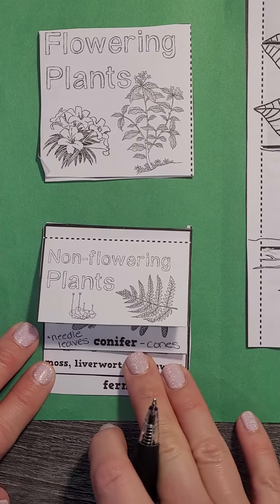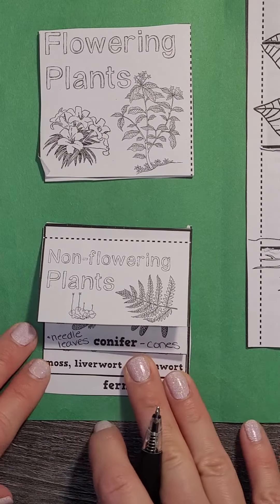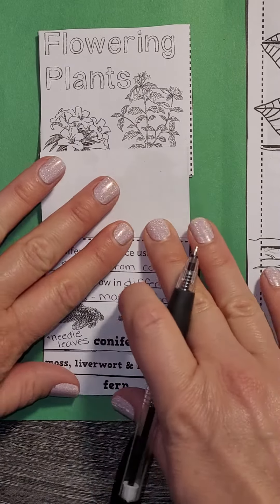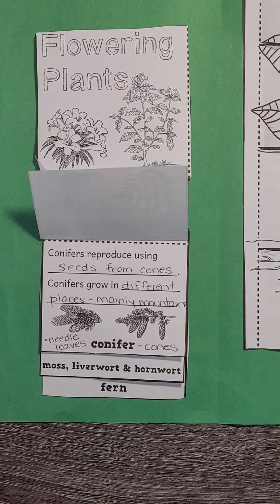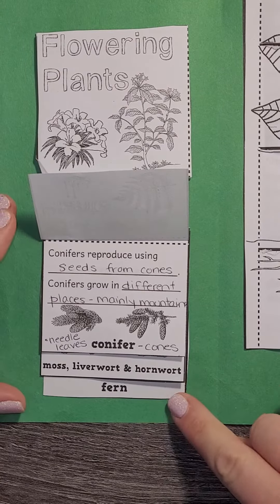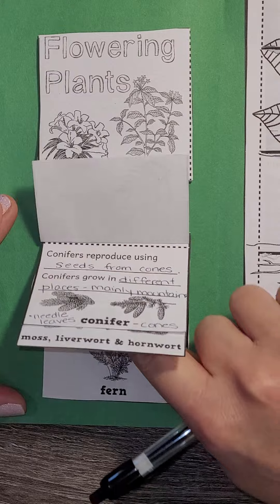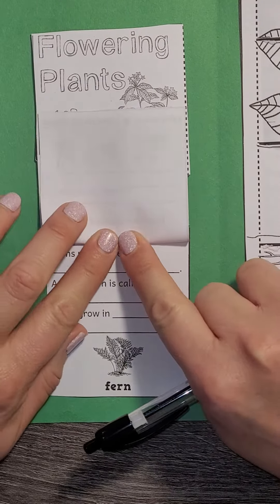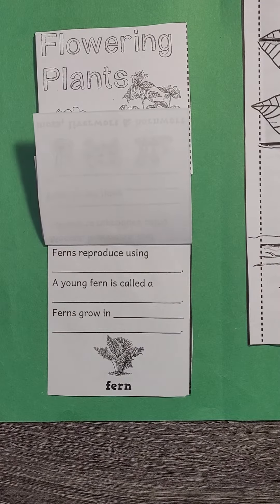Yesterday we learned about the conifer and that the conifer has those seeds from cones, and that is what helps them reproduce, and that they are mostly in mountains. Today we learned about ferns, so I'm going to go ahead and open to my third flap here about ferns.